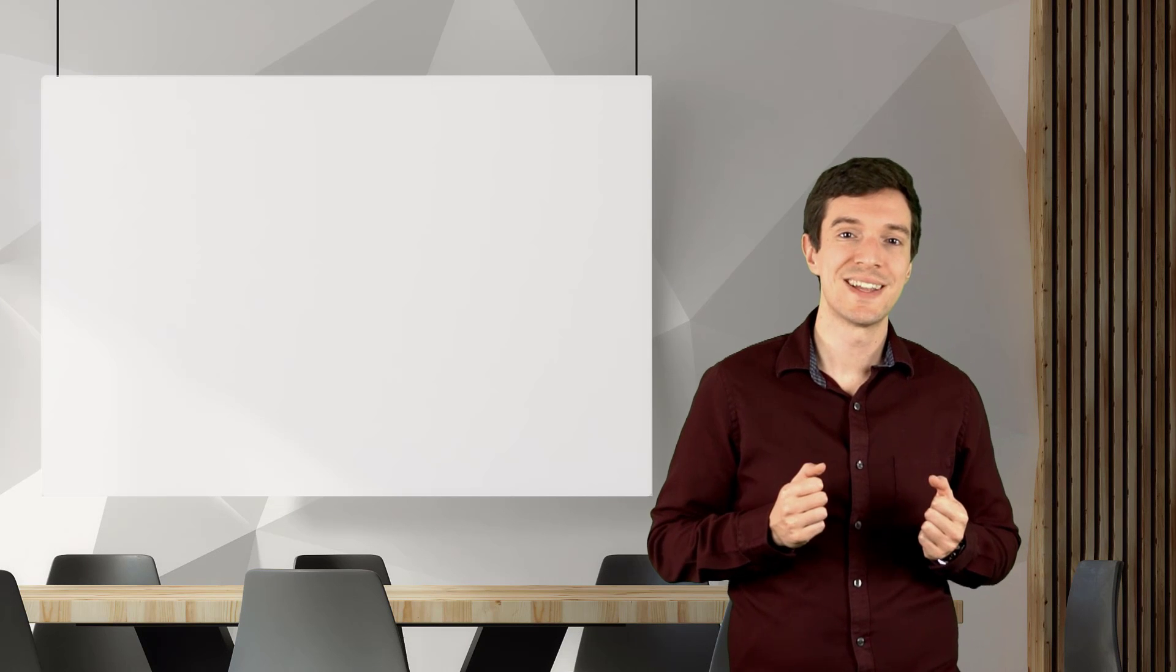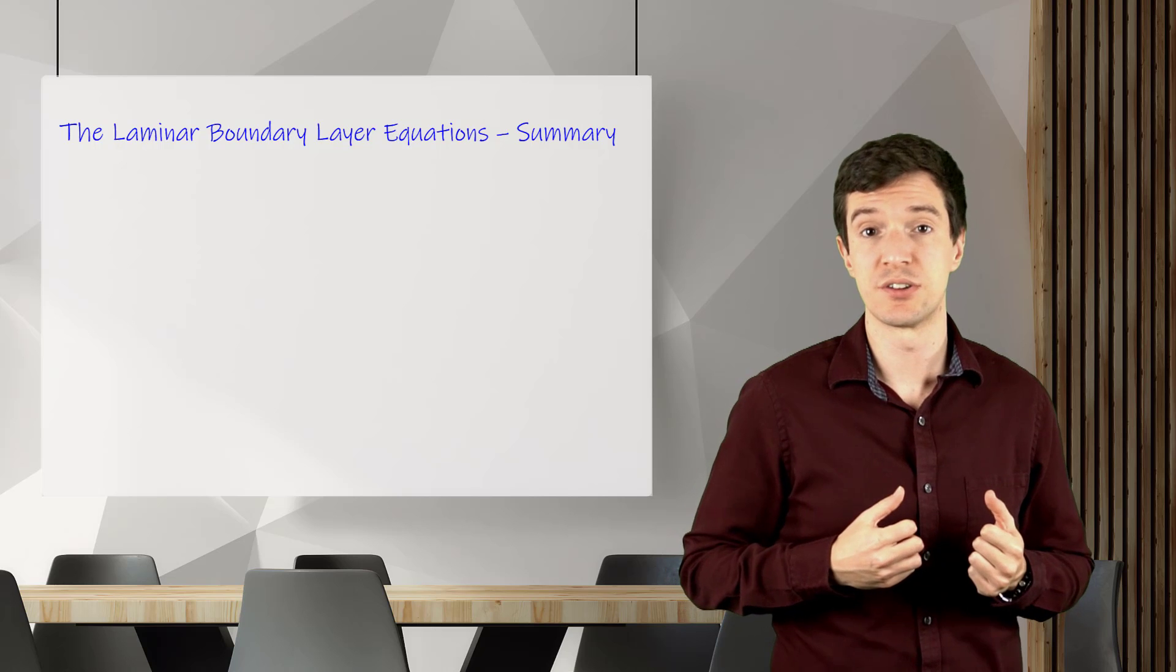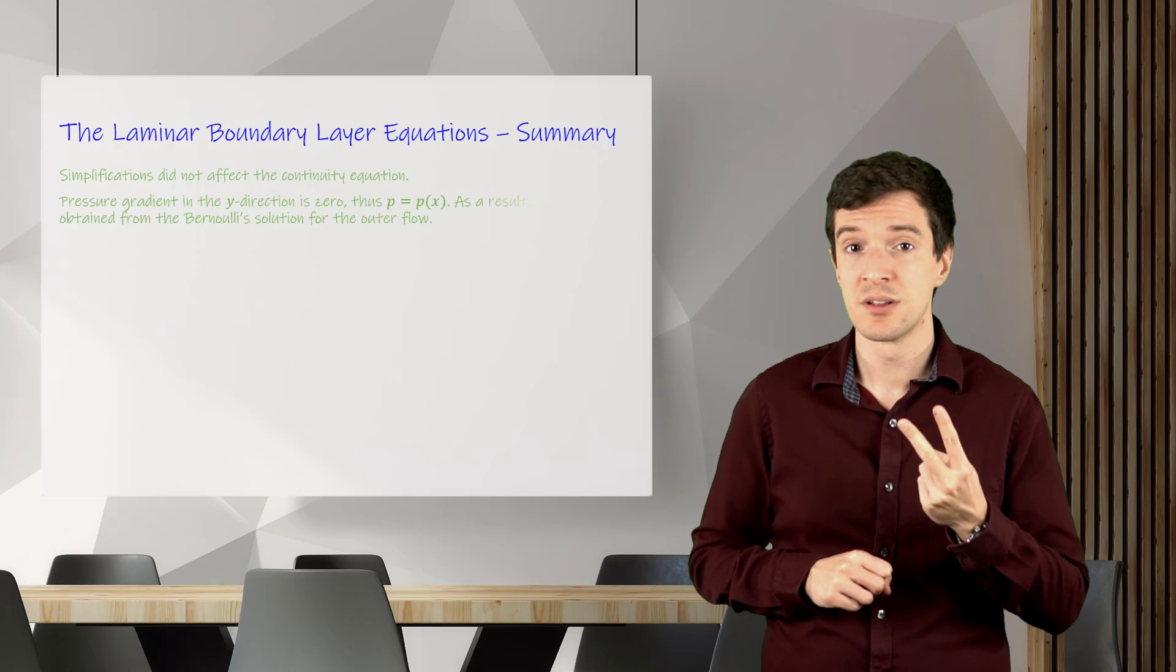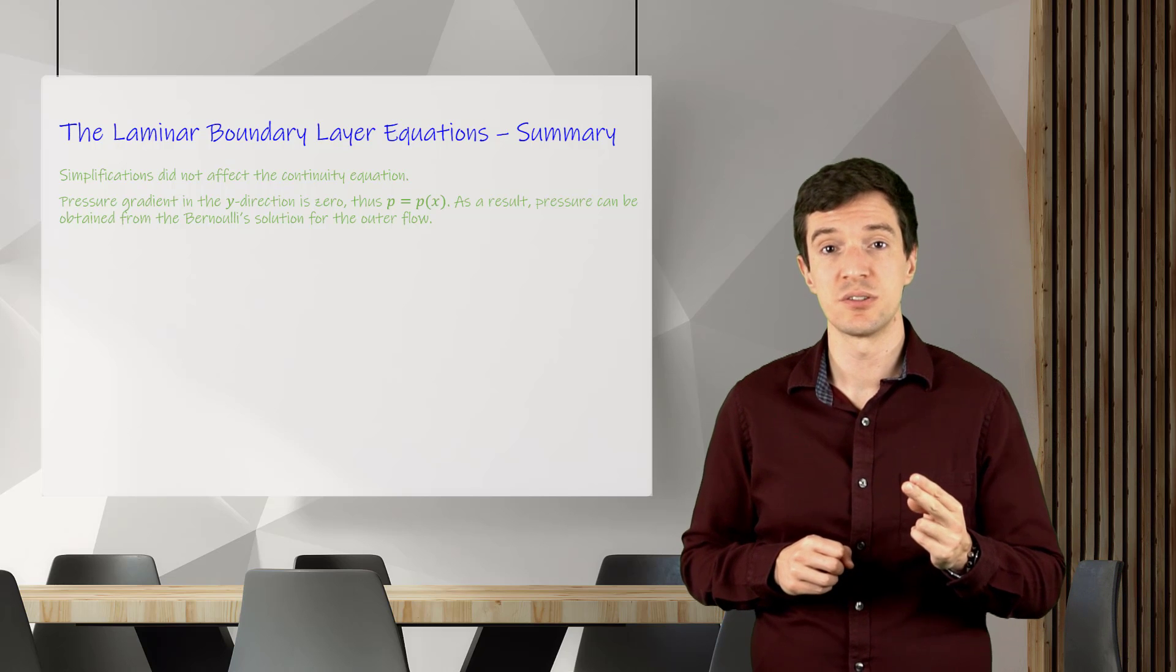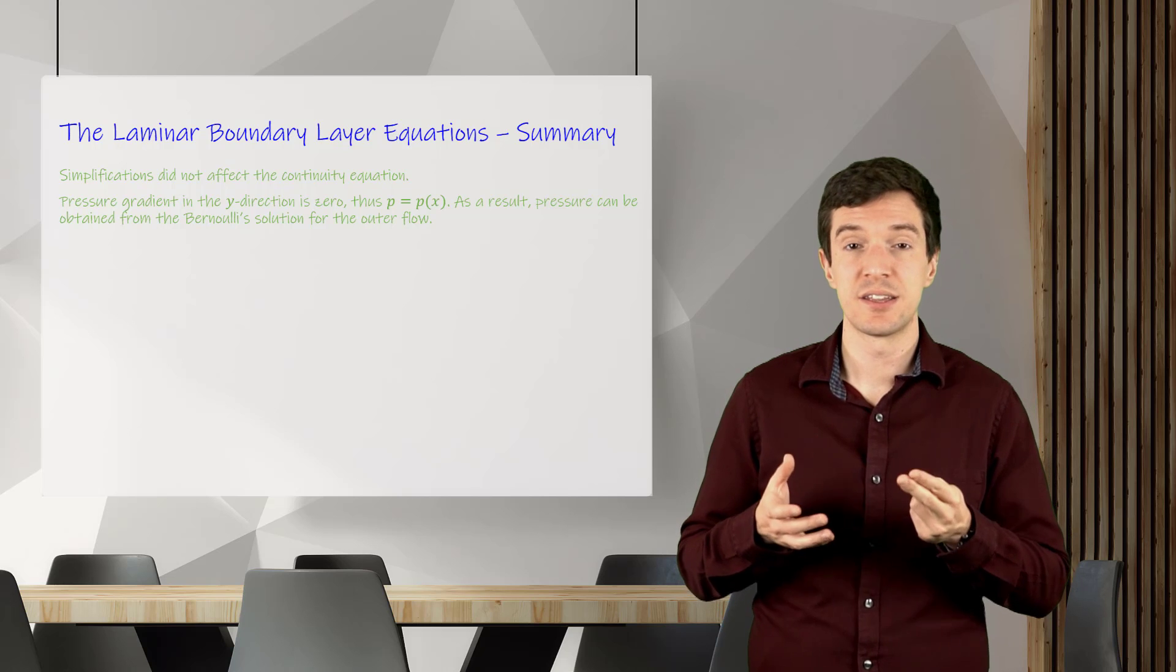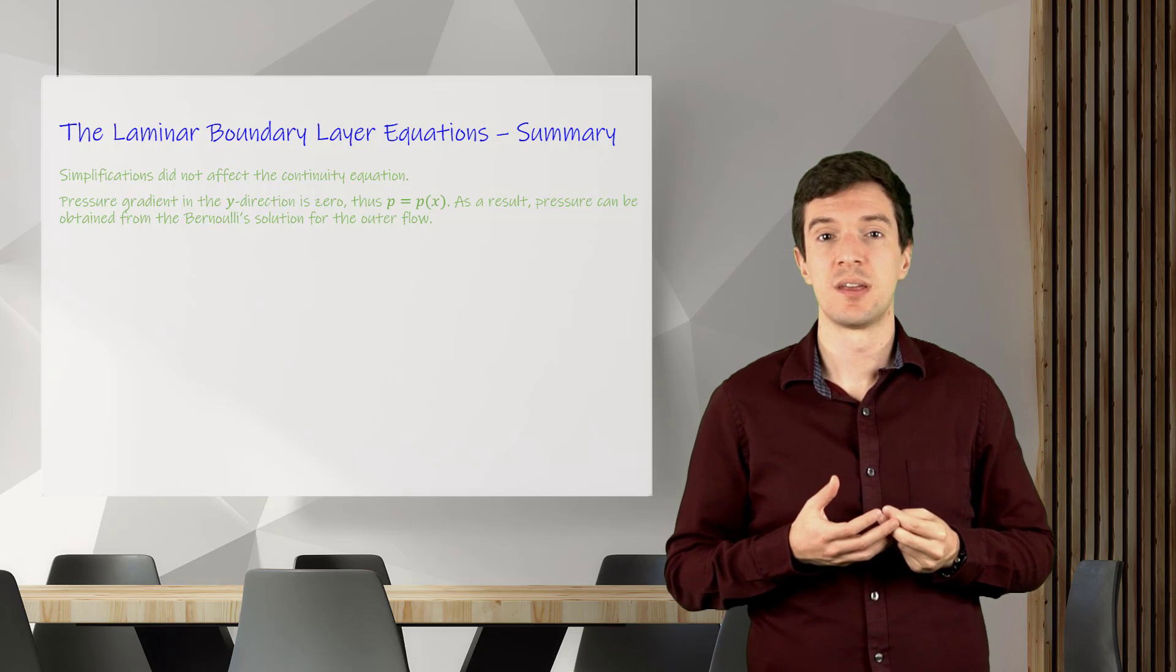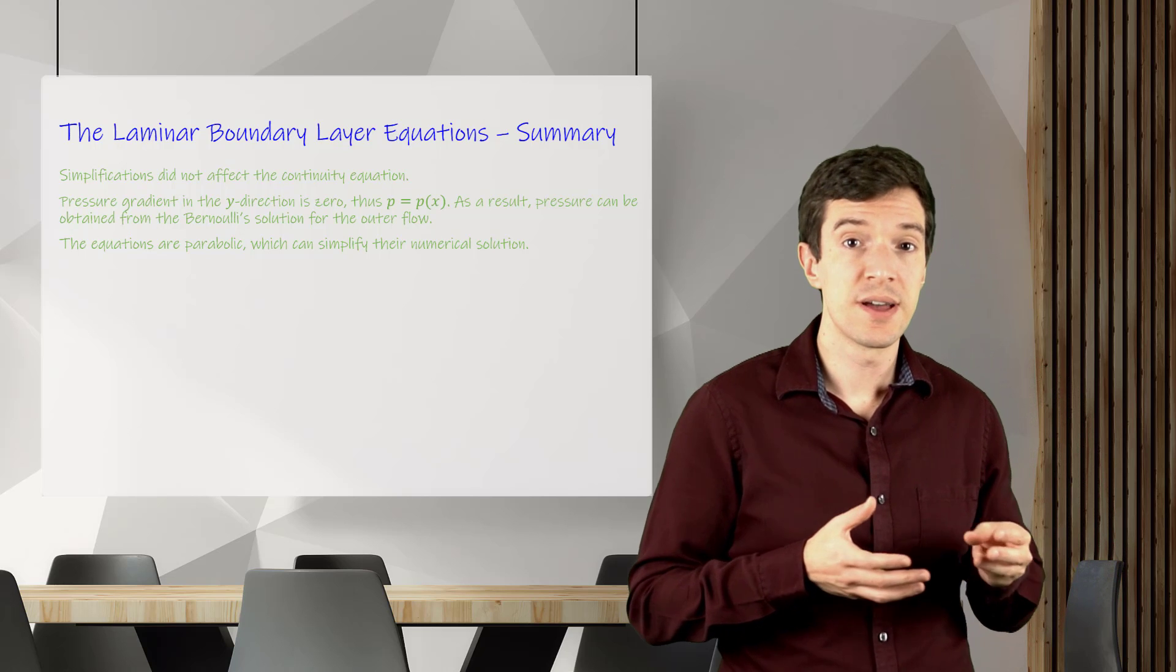So, let's recap what we obtained from the analysis of the laminar boundary layer equations. First of all, the simplifications do not affect the continuity equation. Second, the pressure varies only along the direction parallel to the wall. Hence, the pressure can be calculated through Bernoulli's equation from the outer flow. Third, with all the second x-derivatives vanishing, the equations become parabolic, and this can simplify their numerical solution.